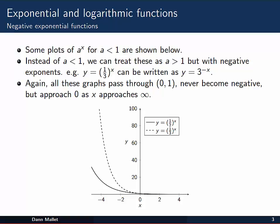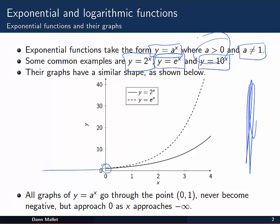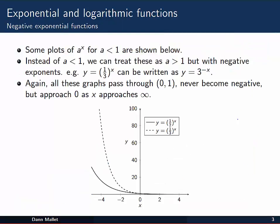Some plots of a to the x for a less than 1, but still greater than 0, are shown in this picture. Now instead of a less than 1, we could actually treat these as a greater than 1, but with negative exponents. So for example, y equal to 1 over 3 all to the x is exactly the same function as y equal to 3 to the minus x.